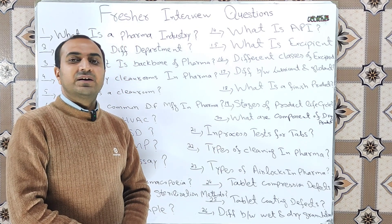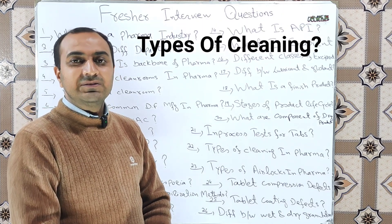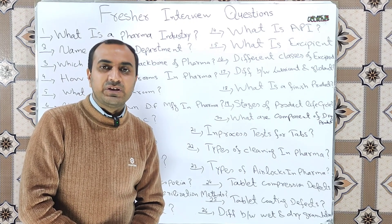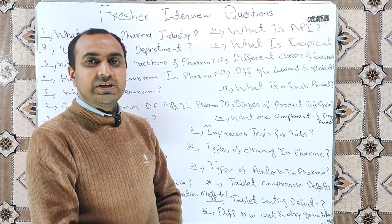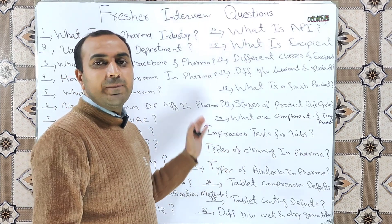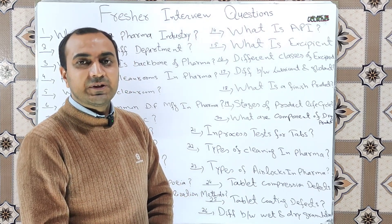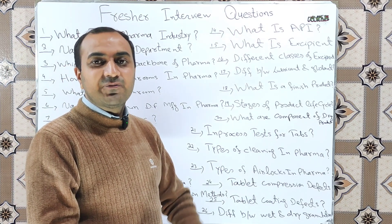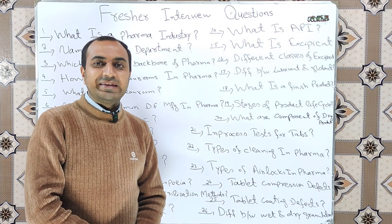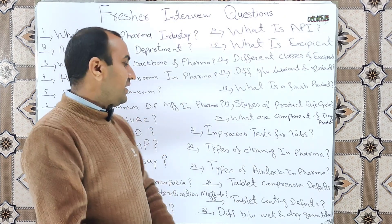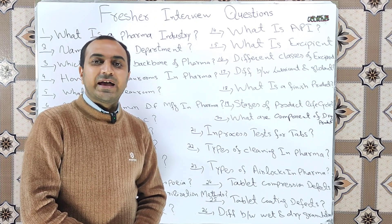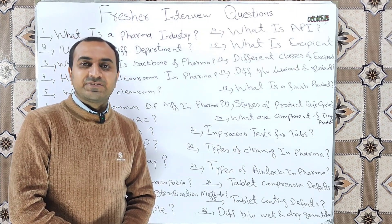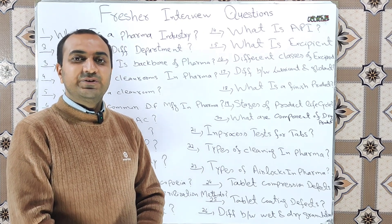What are the types of cleaning in pharma? Three types of cleaning are performed in pharma: Type A cleaning, Type B cleaning, and Type C cleaning. What are the types of airlocks in pharma? There are three types of airlocks in pharma: cascade, bubble, and sink.